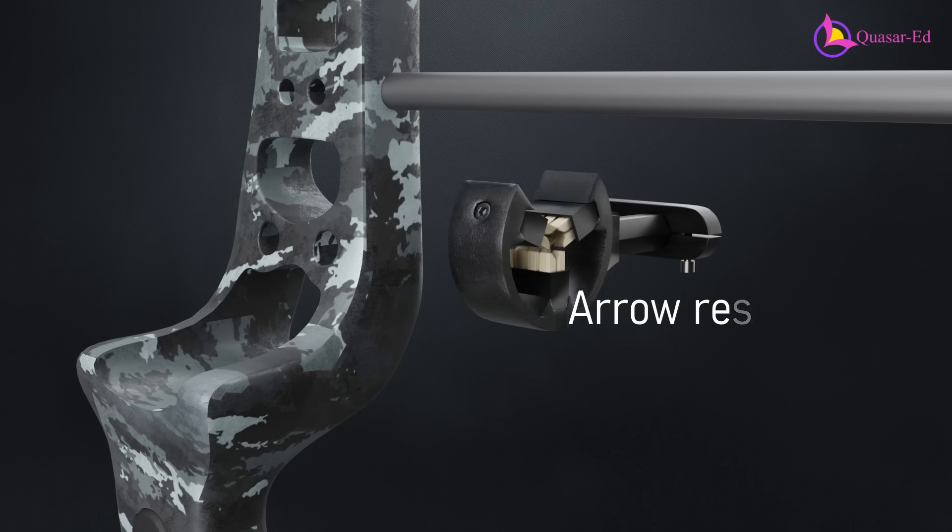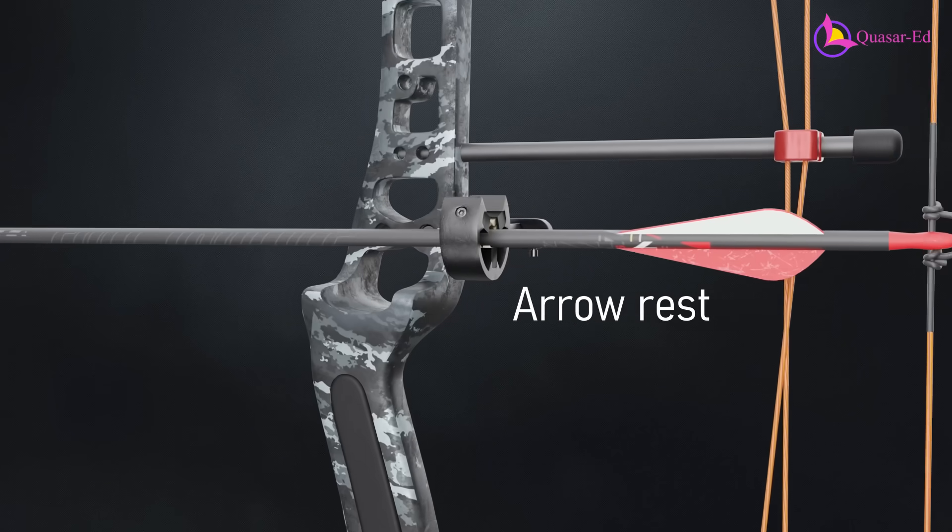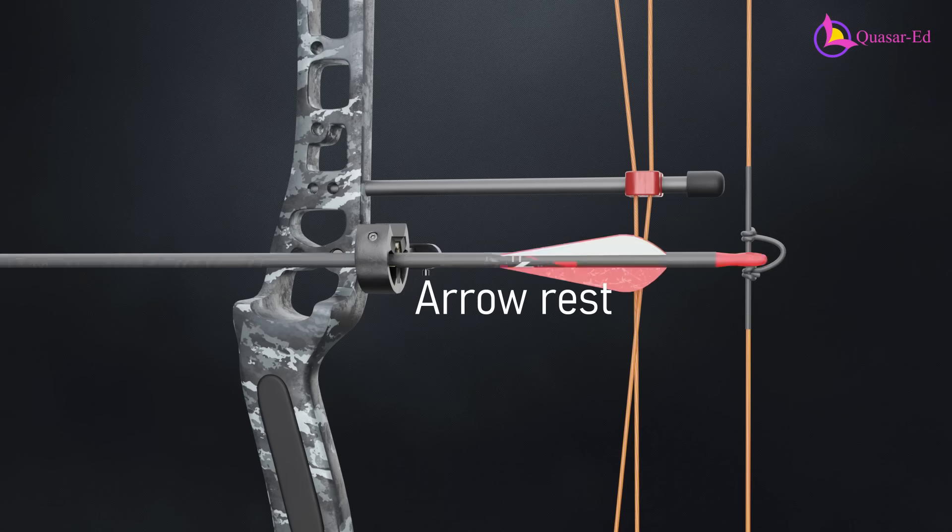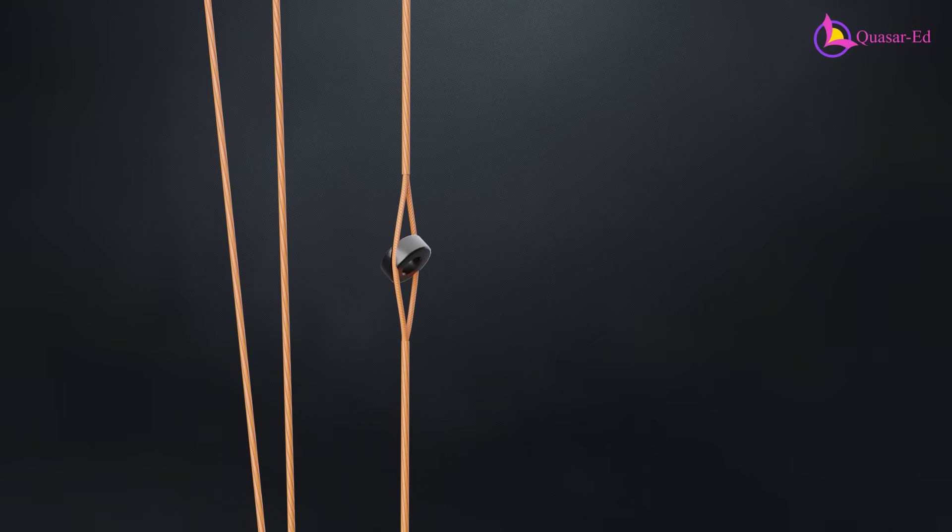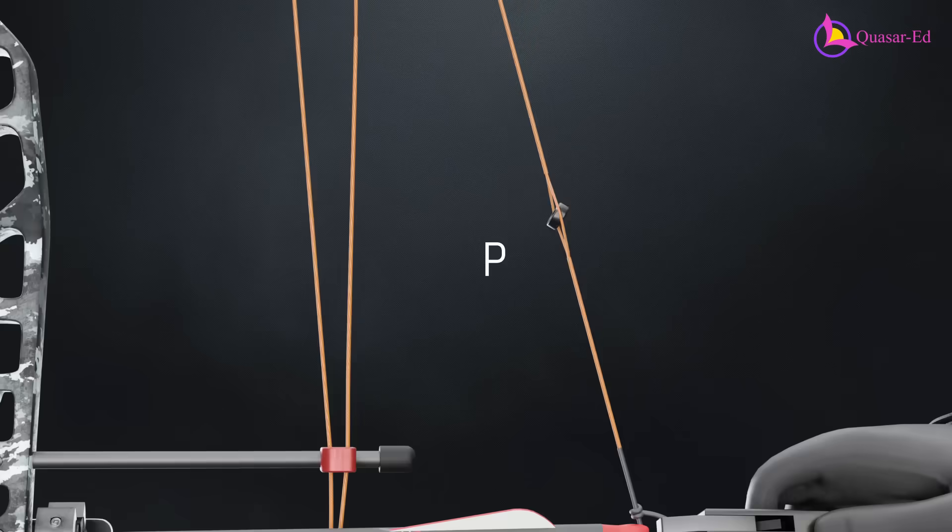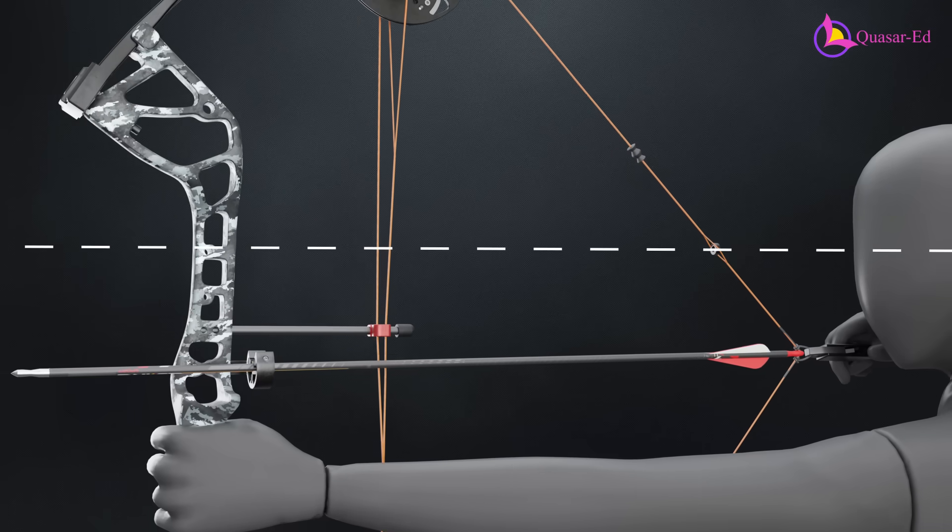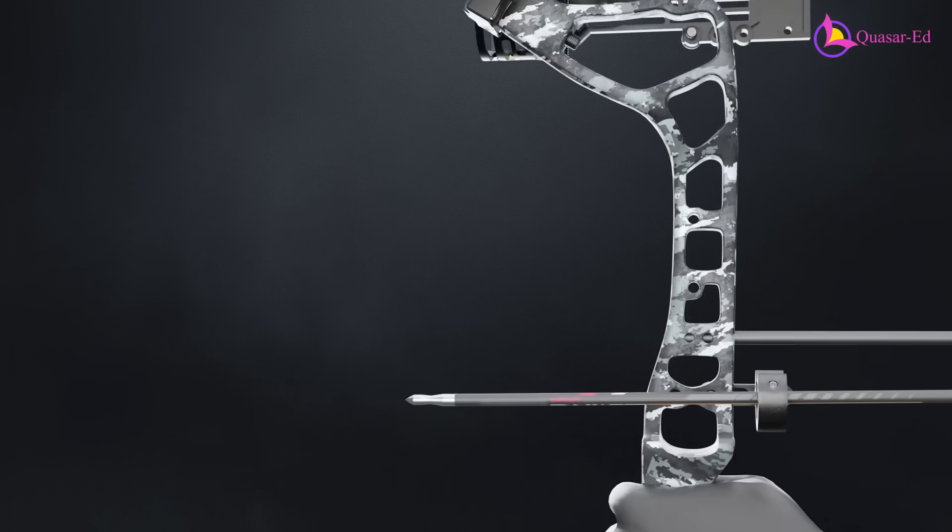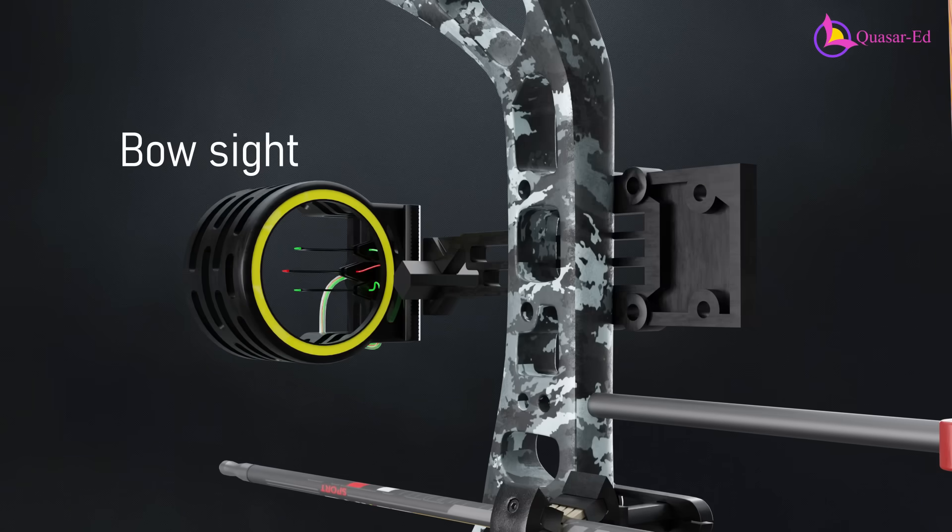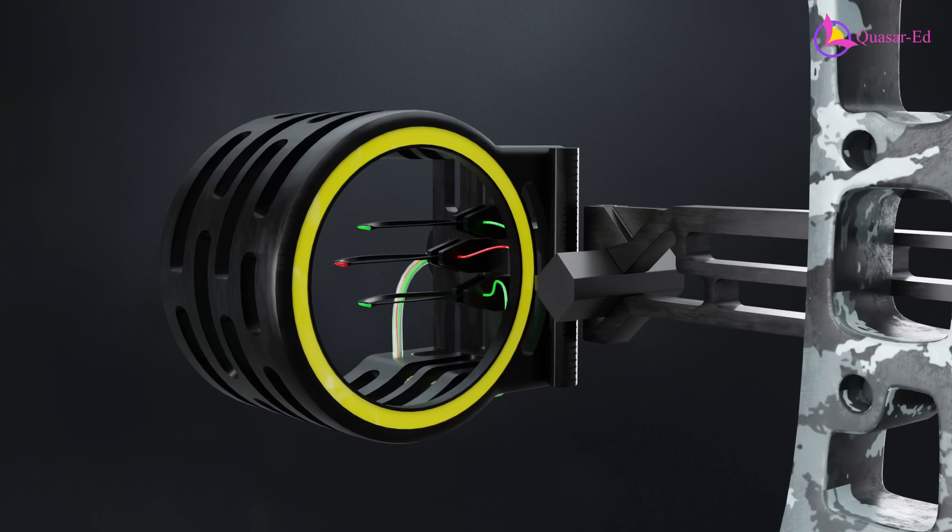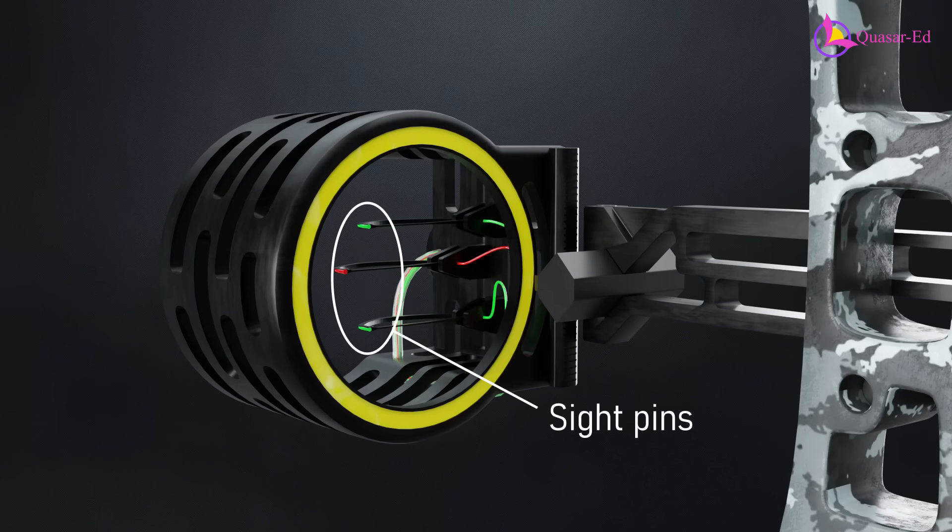Another essential part is the arrow rest, which holds the arrow in place and ensures a straight, accurate shot. For aiming, a small ring called a peep sight is embedded in the bow string. When the bow is drawn to full length, this peep sight aligns with the shooter's eye level, aiding in precision. For even greater accuracy, a bow sight can be attached to the riser. This sight typically consists of multiple adjustable sight pins. Each can be calibrated for different distances.